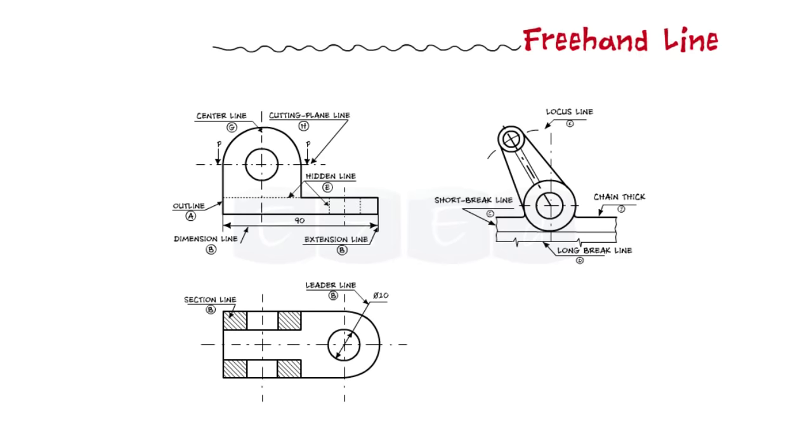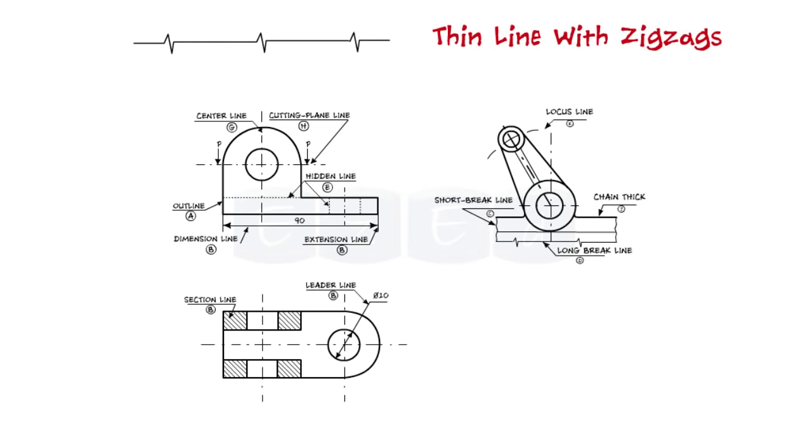Next is a continuous thin freehand line. This line is used to show short break or irregular boundaries. Next is the continuous thin line with zigzags. This line is used to show long break.